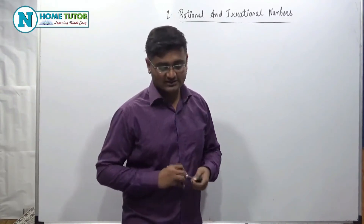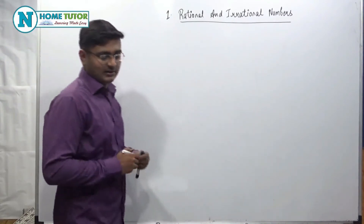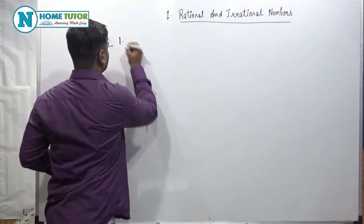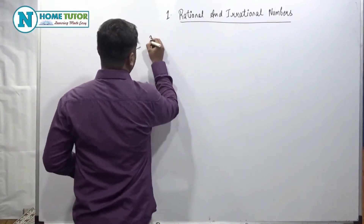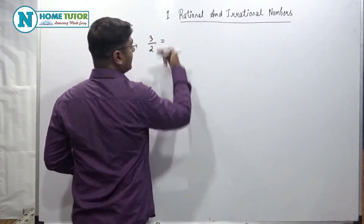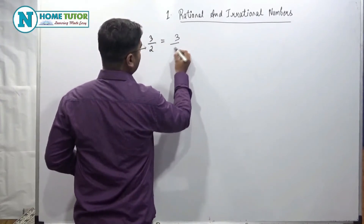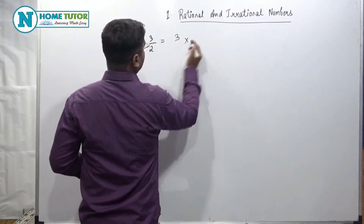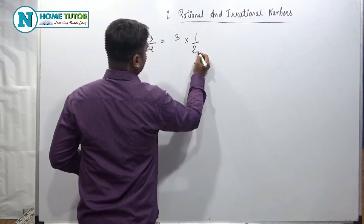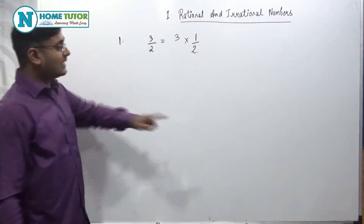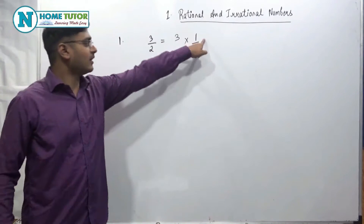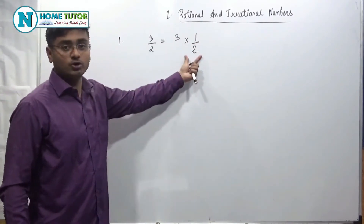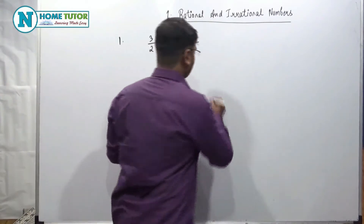Let's see how we can draw the number line. First, we have 3 by 2. How can we write 3 by 2? We can write 3 by 2 as 3 into 1 upon 2 — that is, 3 times 1/2. So how many parts will I divide each unit into? Into 2 parts. I will divide each unit into 2 parts.